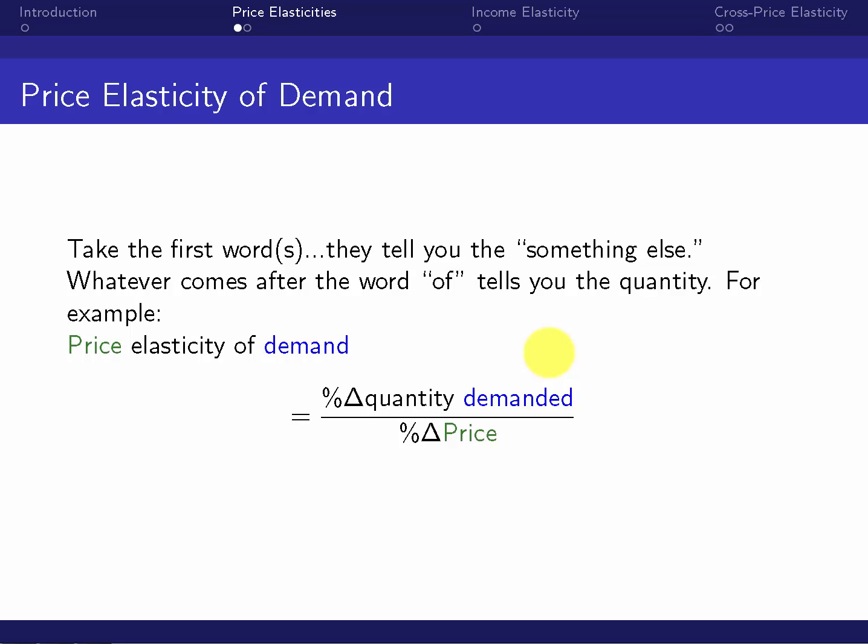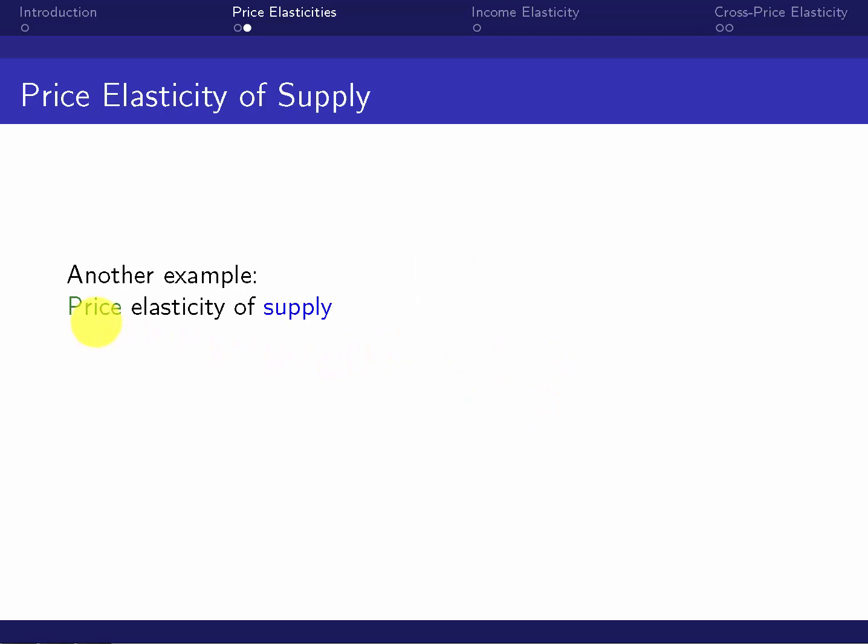And now let's do a price elasticity of supply. Now something else is price, quantity is supply. So now we get quantity supplied over price. We're looking at these percentage changes.